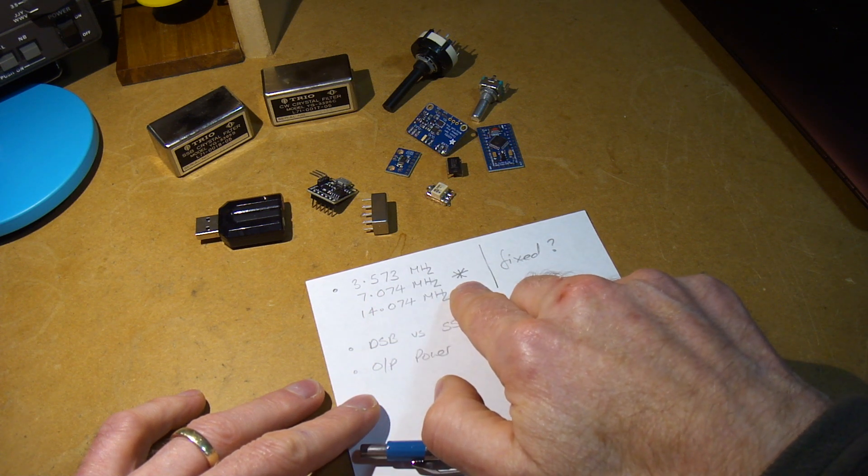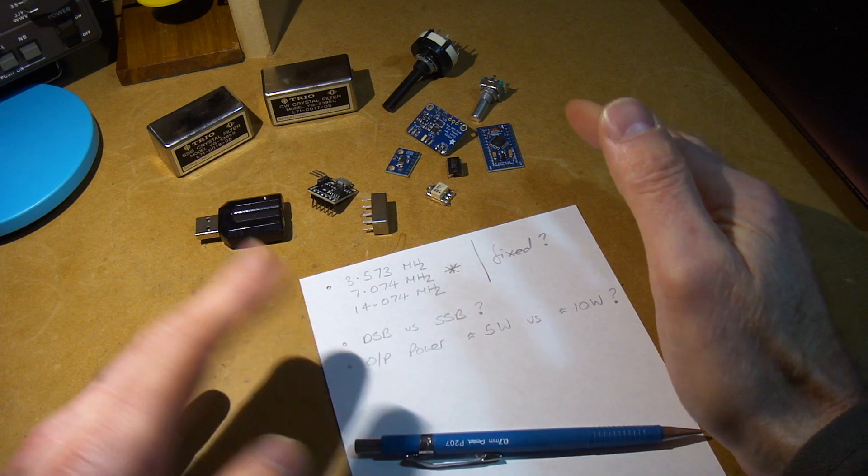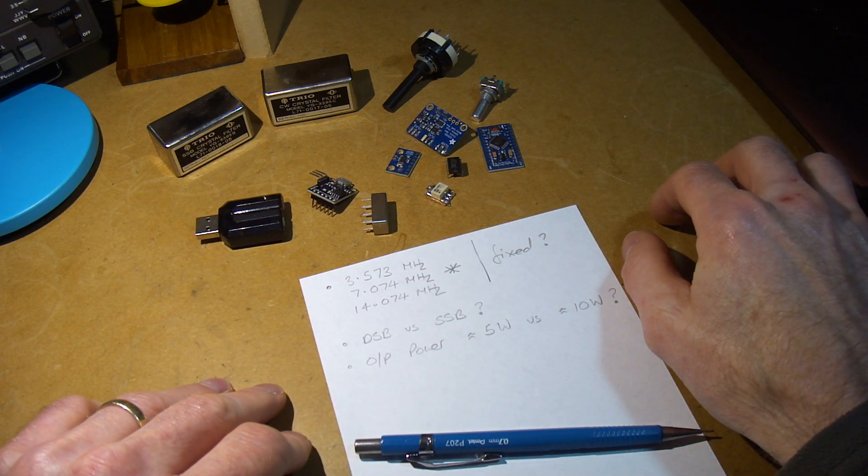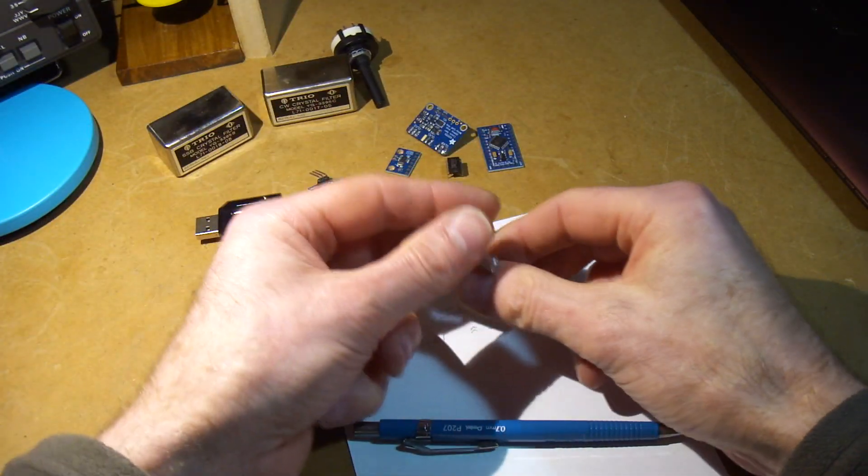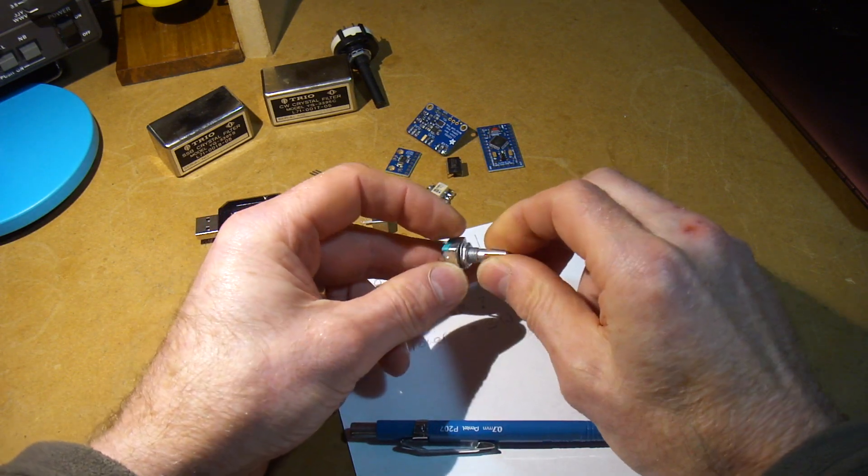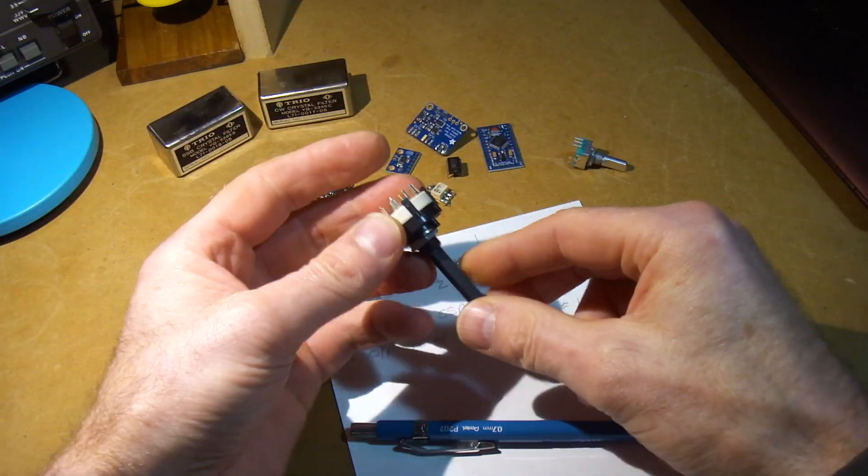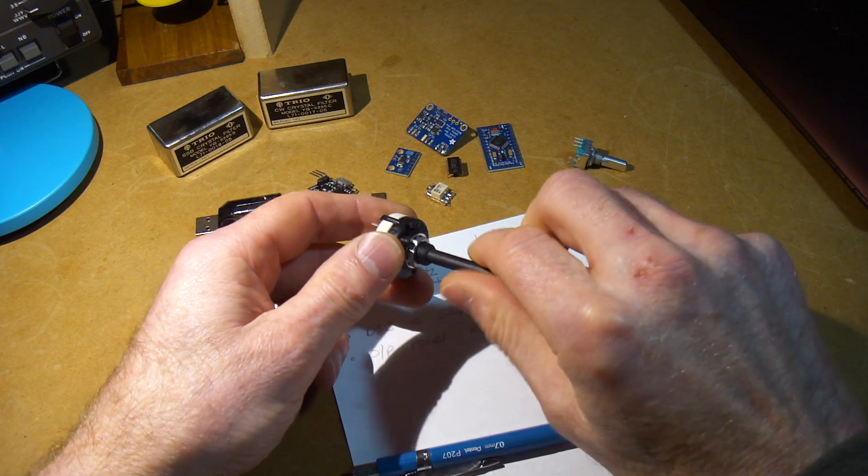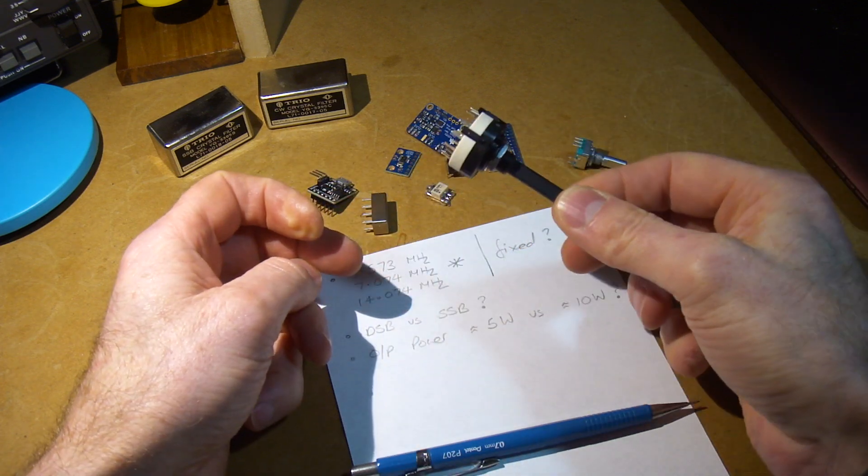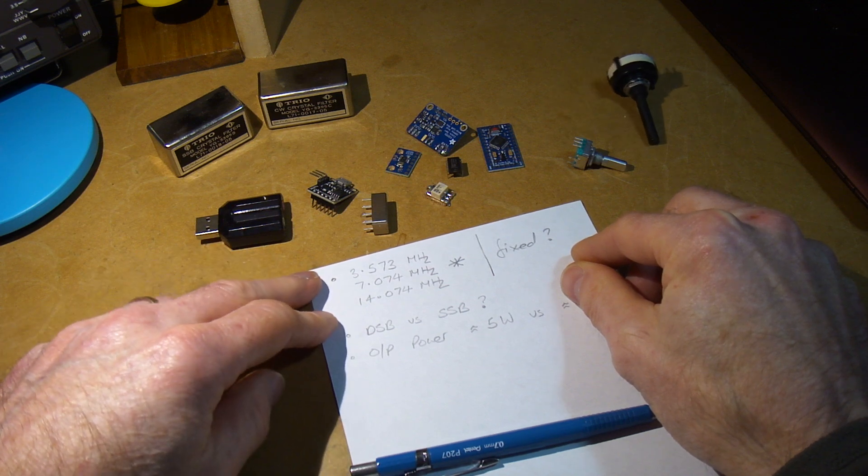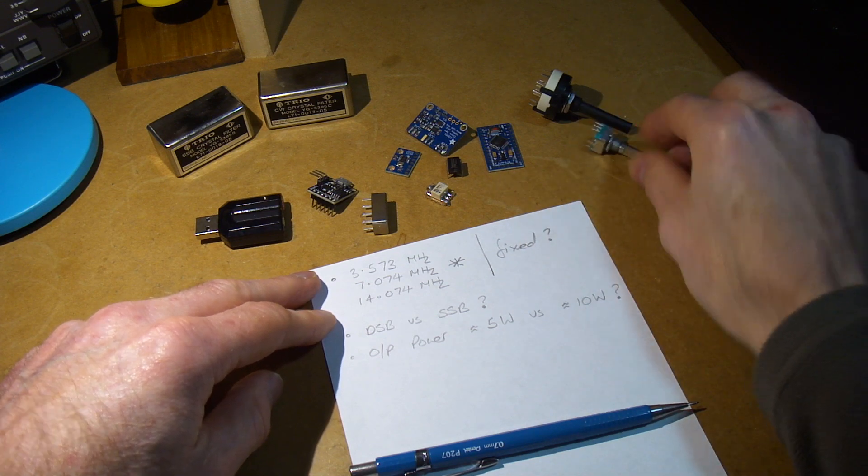So for 80 meters, 3.573 MHz, for 40 m, 7.074, and for 20 m, 14.074. I'm just going to stick with those bands for now. I'm sort of thinking, hence the question marks, about having a radio that, rather than having a rotary encoder to select any specific frequency and having a display, just having a simple switch that allows me to switch to 80, 40, and 20 m. So I guess that's the first question, fixed or not fixed? I can go either way.